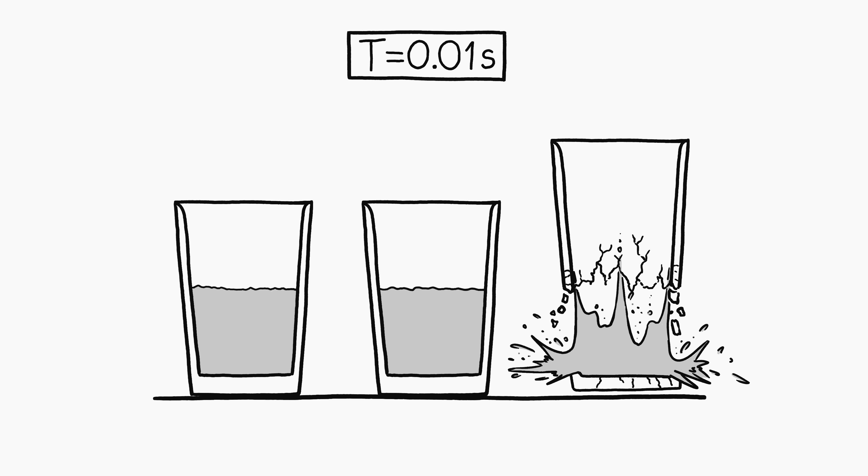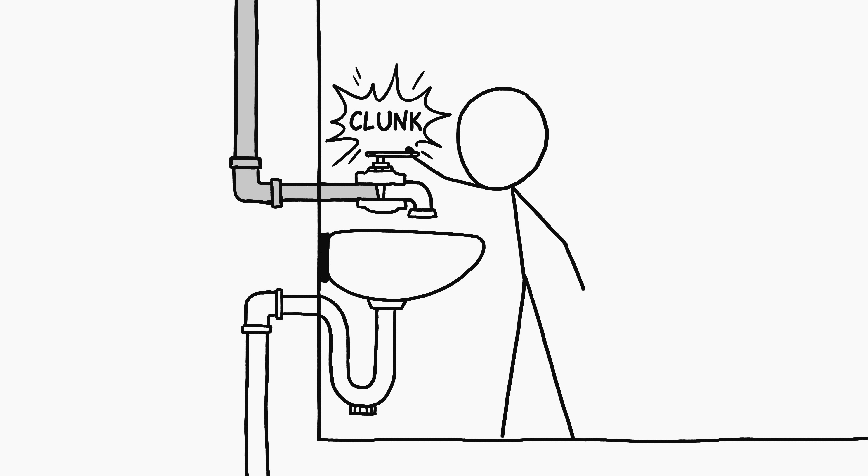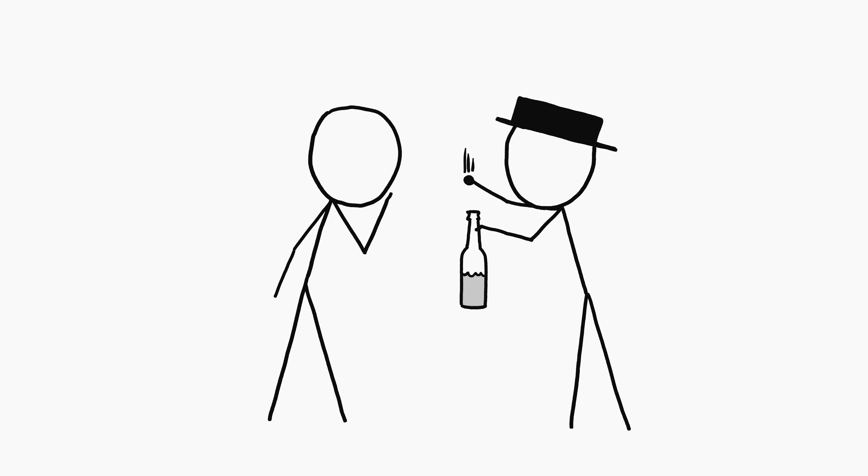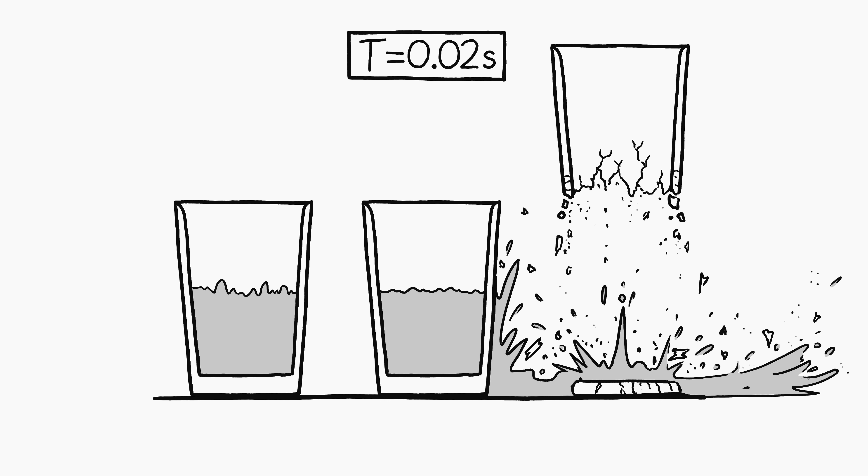This water hammer effect, which is responsible for the clunk you sometimes hear in old plumbing when you turn off the faucet, can also be seen in the well-known party trick of smacking the top of a glass bottle to blow out the bottom. In our situation, the forces would be more than enough to destroy even the heaviest drinking glasses.